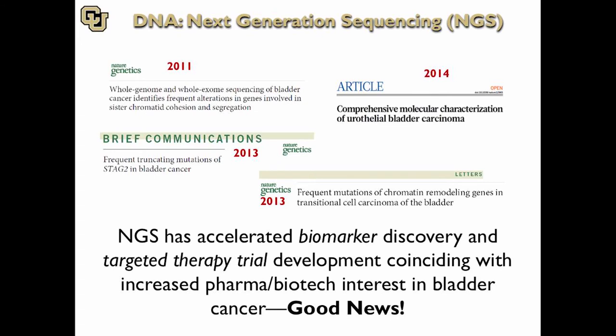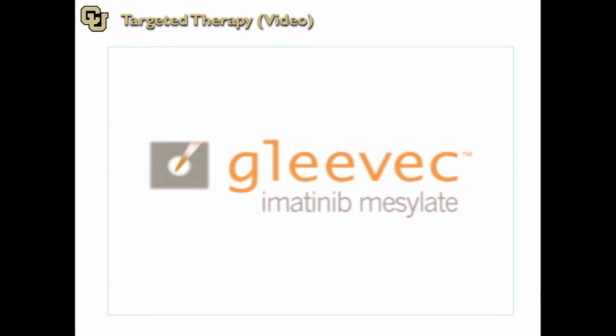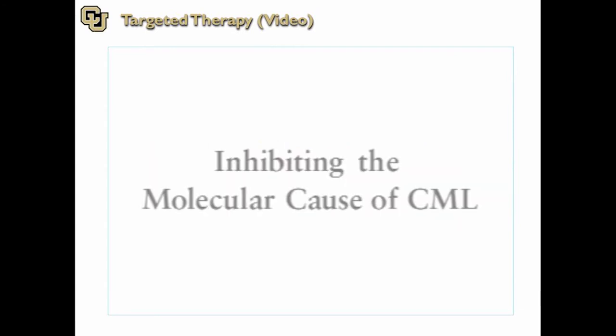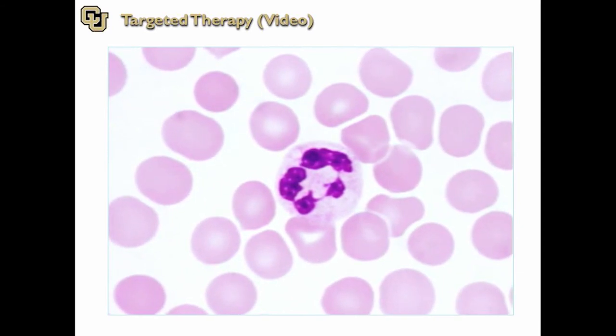Finally, next generation sequencing — I'll show more examples in the second talk. This has been revolutionary because we've identified so many different genes and sites that are mutated in bladder cancer that potentially have targeted therapeutics. This last video shows how many of the targeted agents being developed work — using CML with Gleevec as the example, which is the fundamental idea behind all of these.